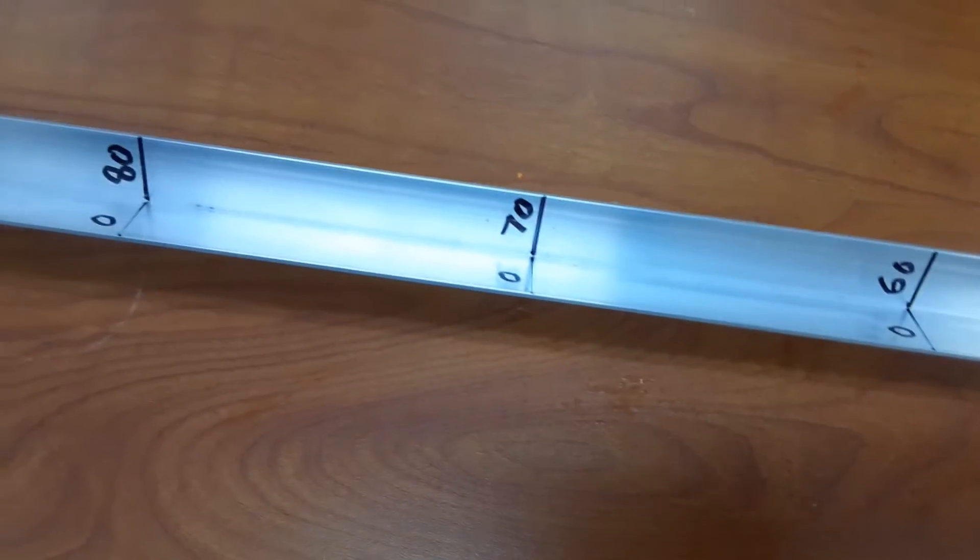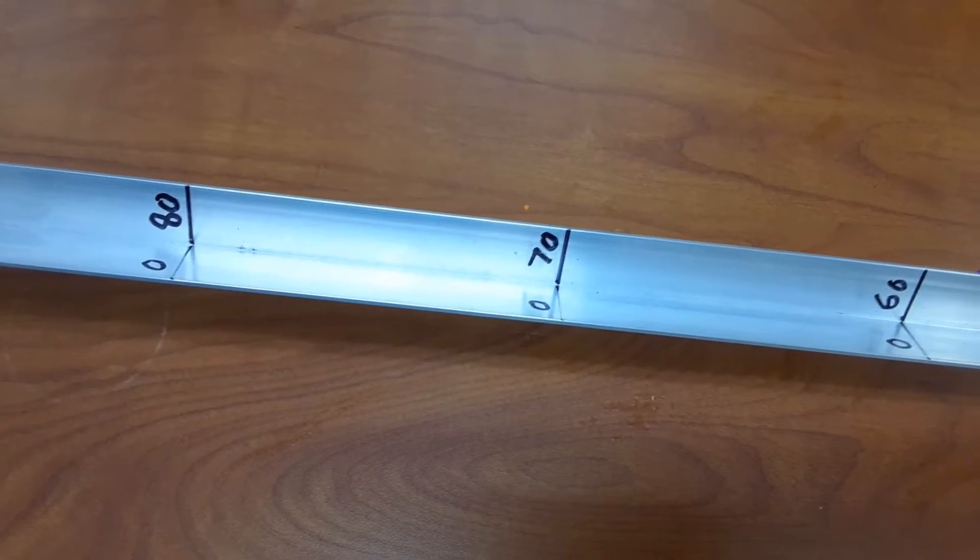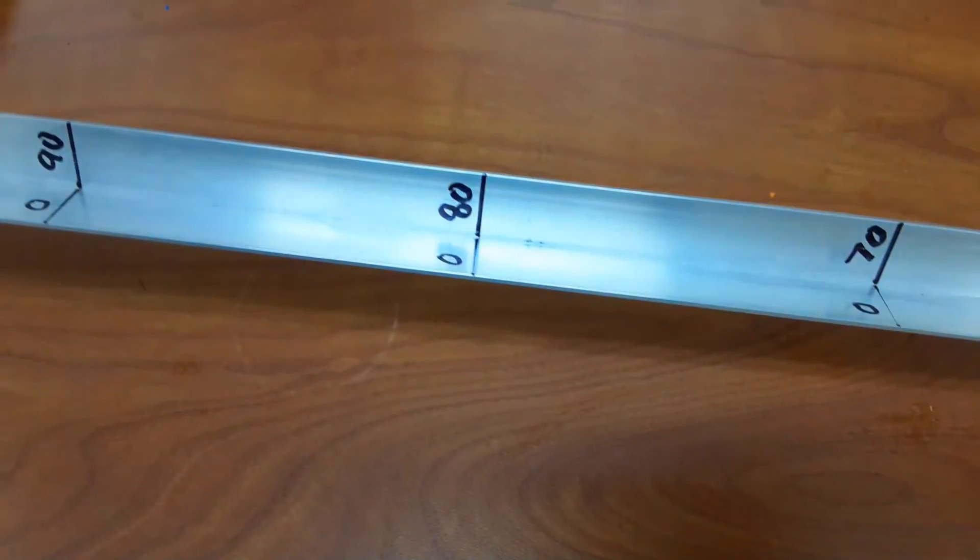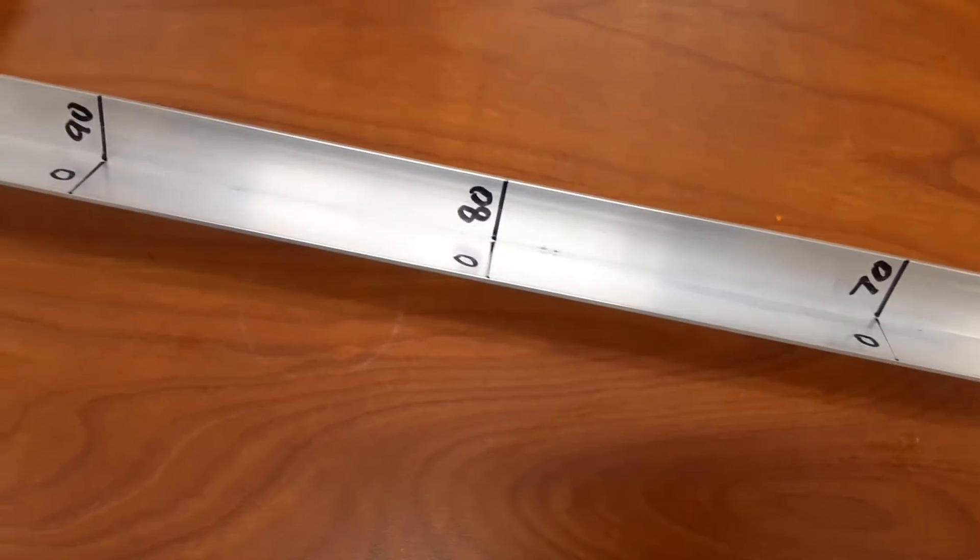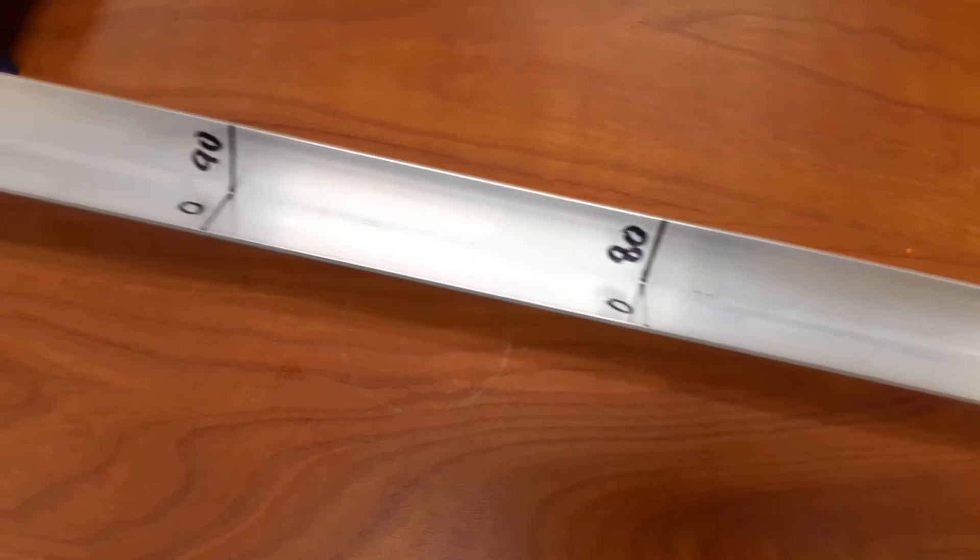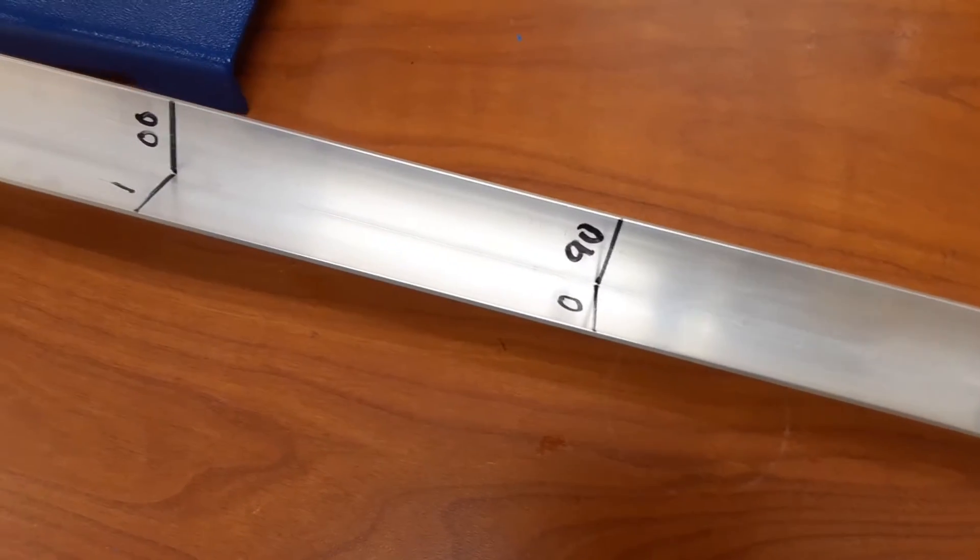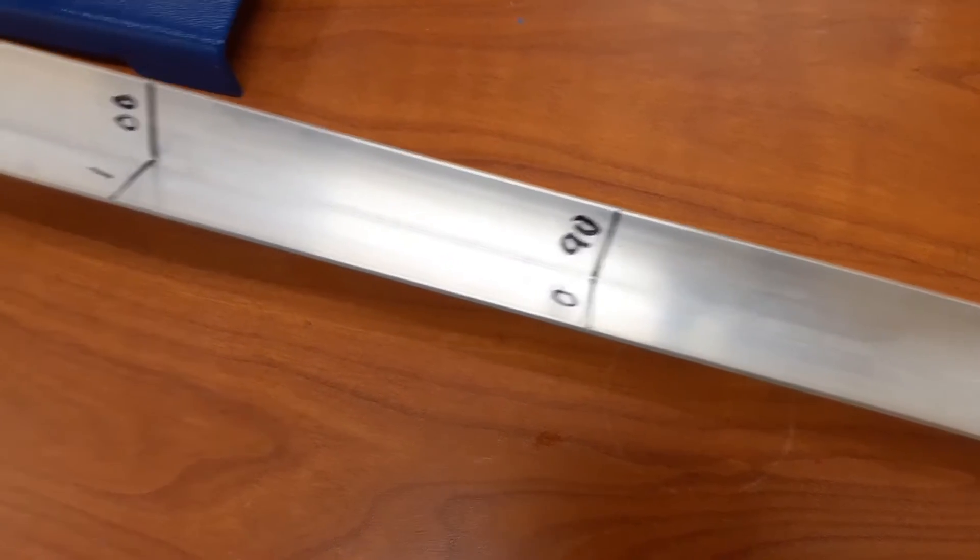And then the next marking on the angle is 70 centimeter or 0.70 meter, and then 0.80 meter or 80 centimeter. So it's up to you whether you want to record your distances in meter or in centimeter. And then the next distance is 90 centimeter or 0.90 meters.